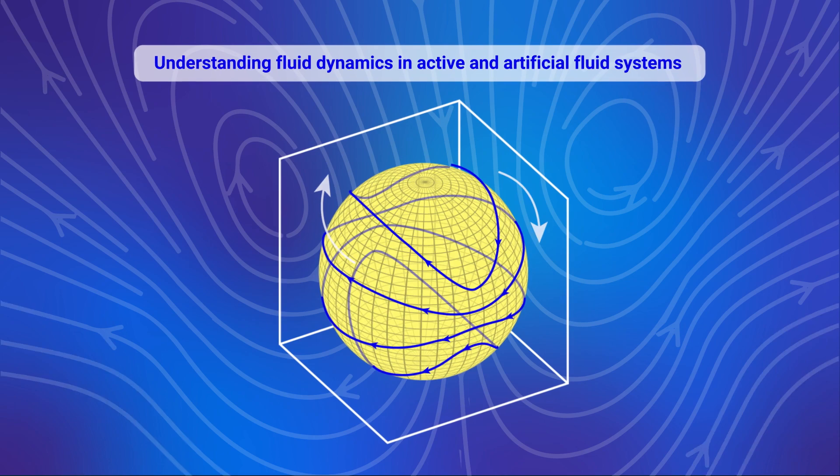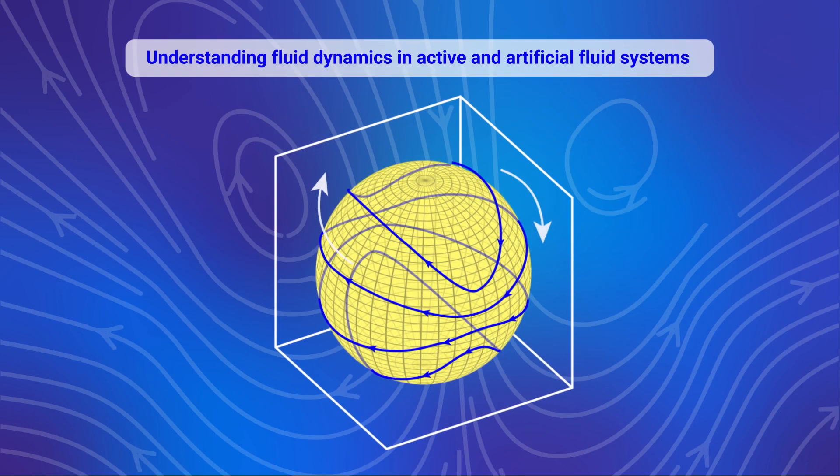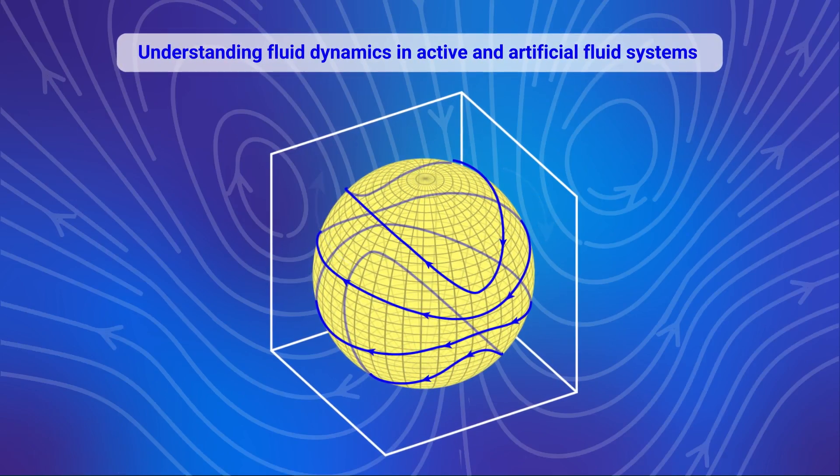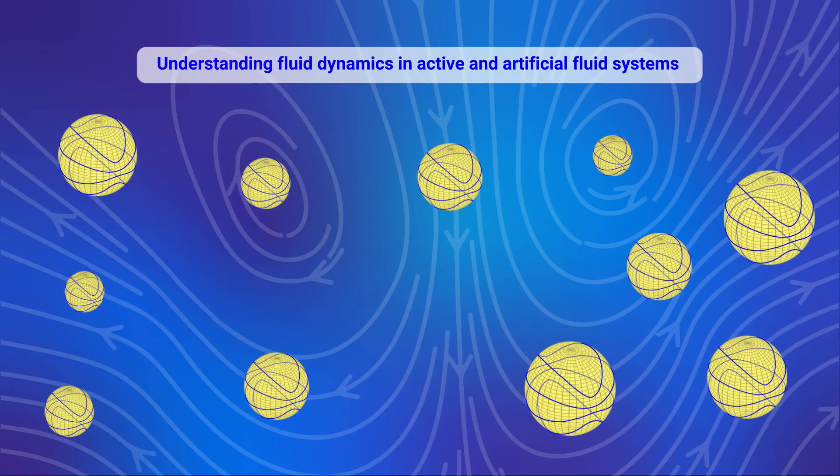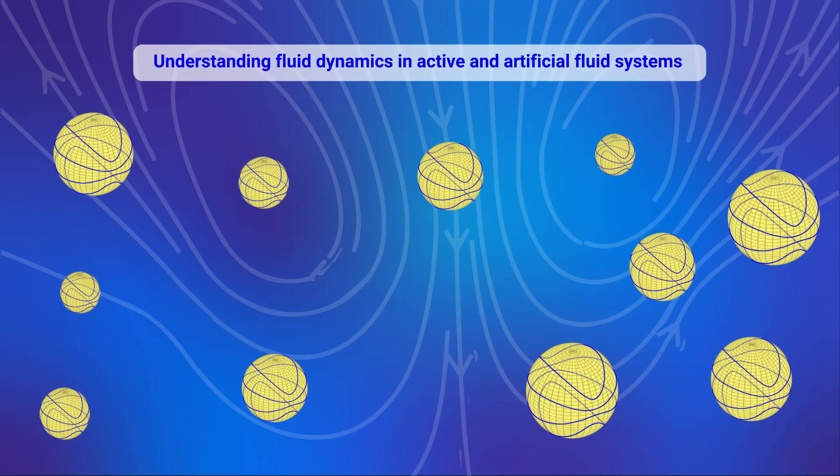Jeffrey's orbits and their relation to micro swimmers in a variety of flows can help advance our understanding of fluid dynamics in active and artificial fluid systems.